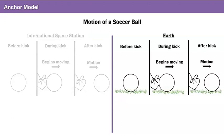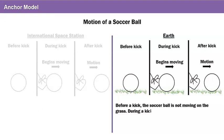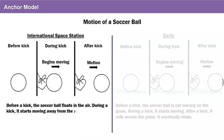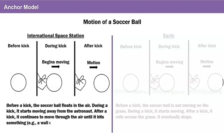Let's add an explanation to our earth model. Before a kick, the soccer ball is not moving on the grass. During a kick, it starts moving. After a kick, it rolls across the grass and eventually stops. We also need an explanation for our international space station model. Before a kick, the soccer ball floats in the air. During a kick, it starts moving away from the astronaut. After a kick, it continues to move through the air until it hits something, for example a wall or another astronaut.